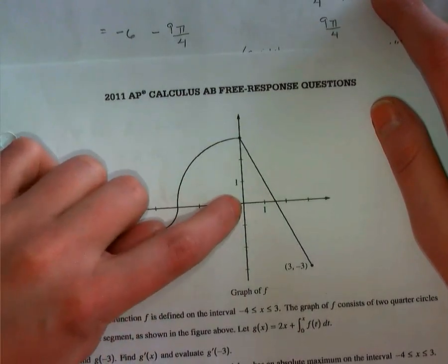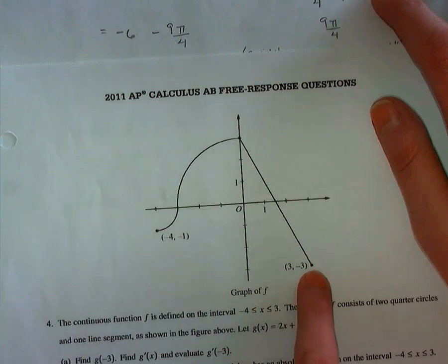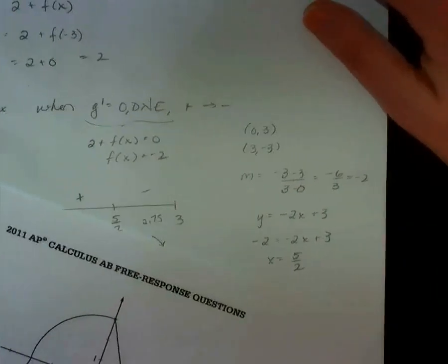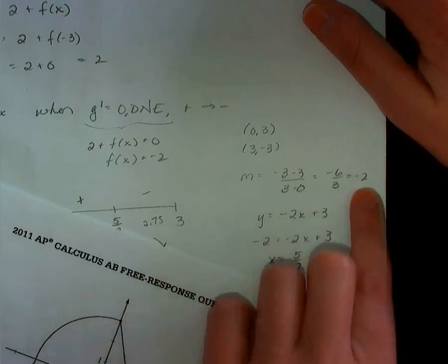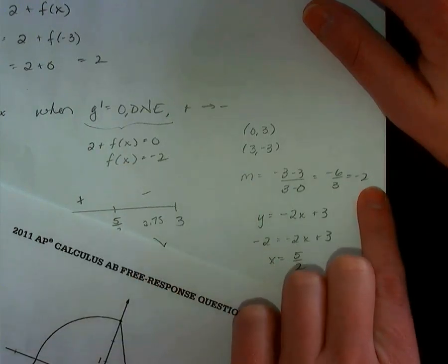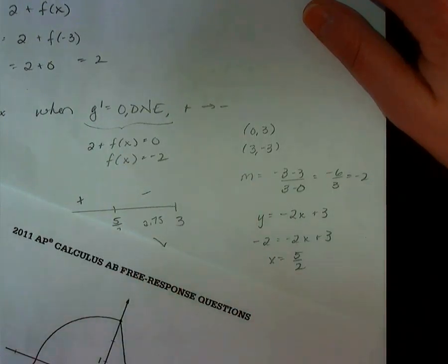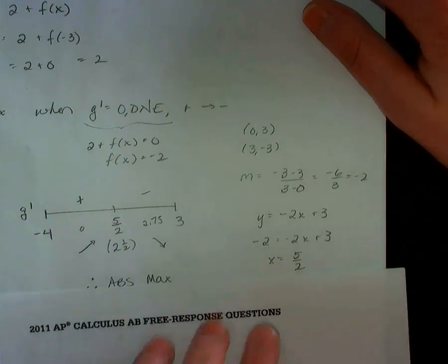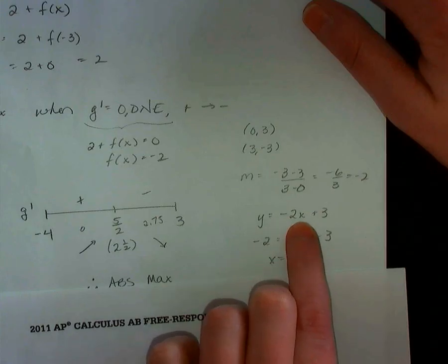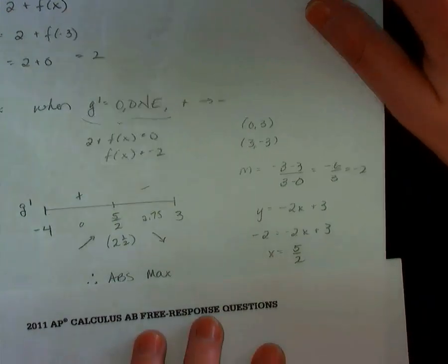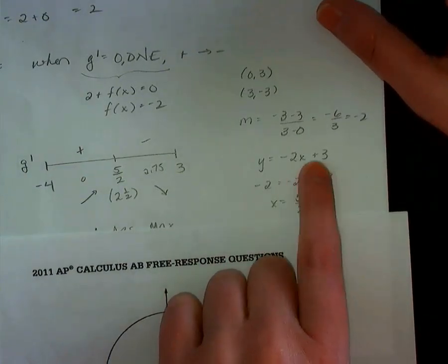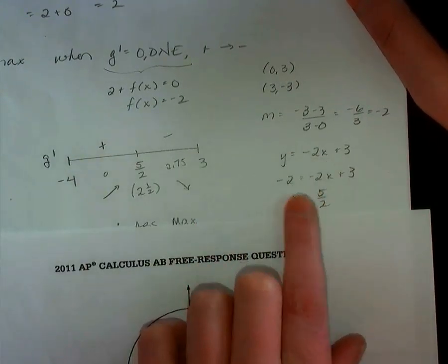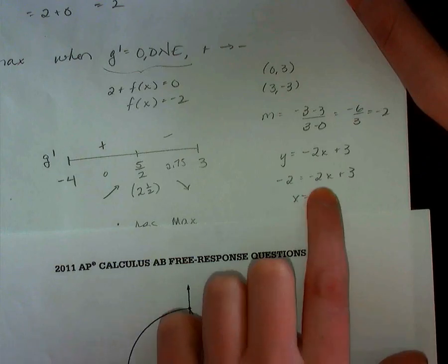So I take the point (0, 3) and I'm going to take the point (3, negative 3). And this is my scrap work over here. I find the slope of the line and I get negative 2. And now I know the y-intercept is 3 because that was given to me on the graph. So my equation of the line, y equals negative 2x plus 3. Now, I want to know when does that line, when does f(x) equal negative 2? Set them equal, solve, and I get x equals 5 halves.